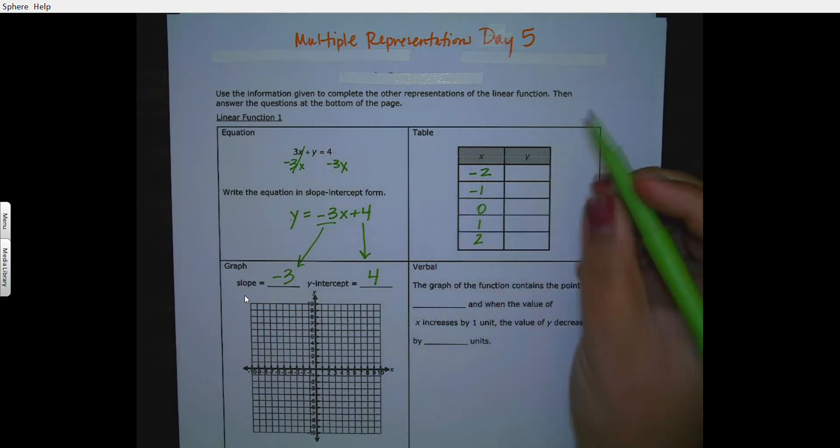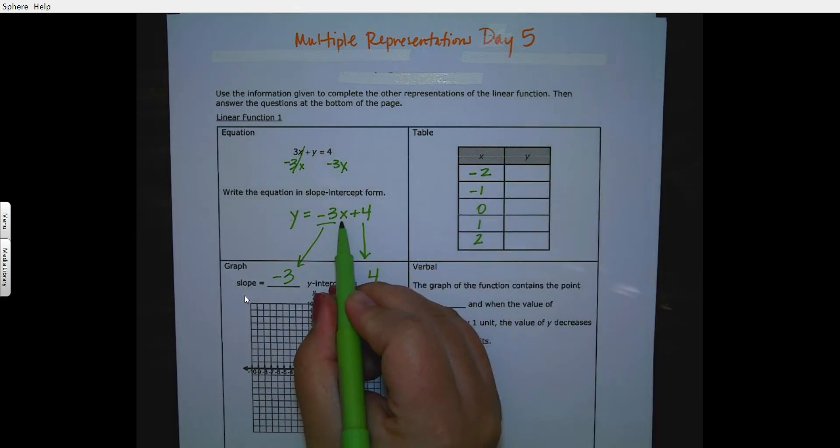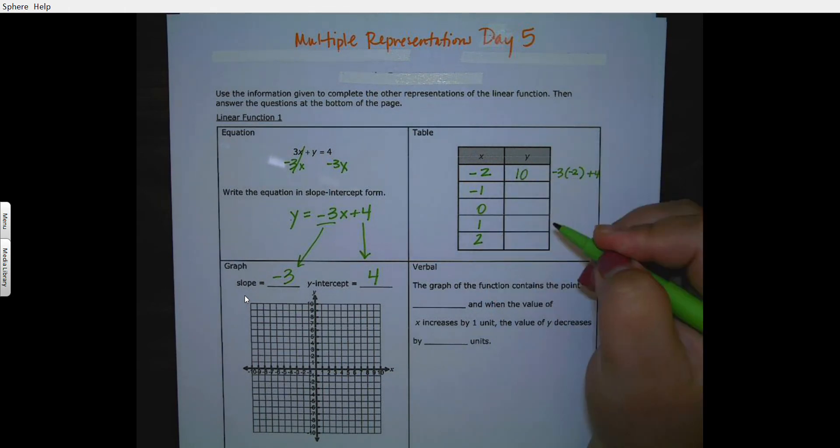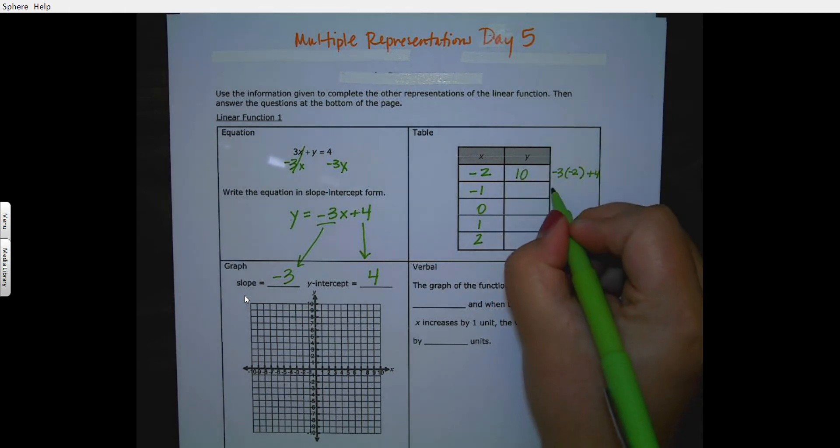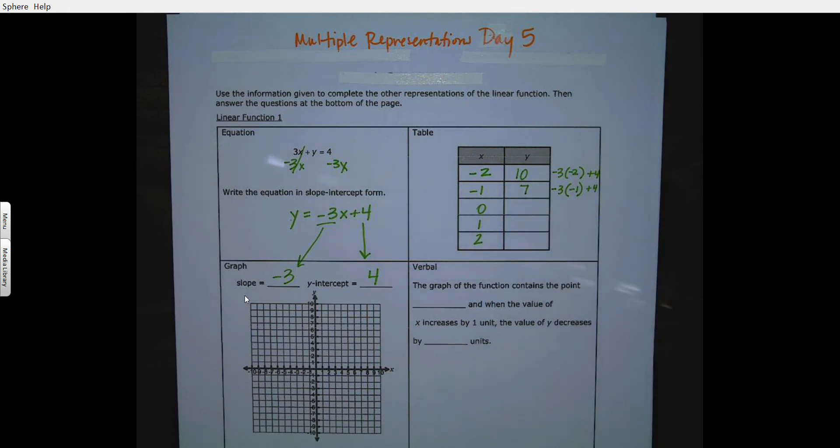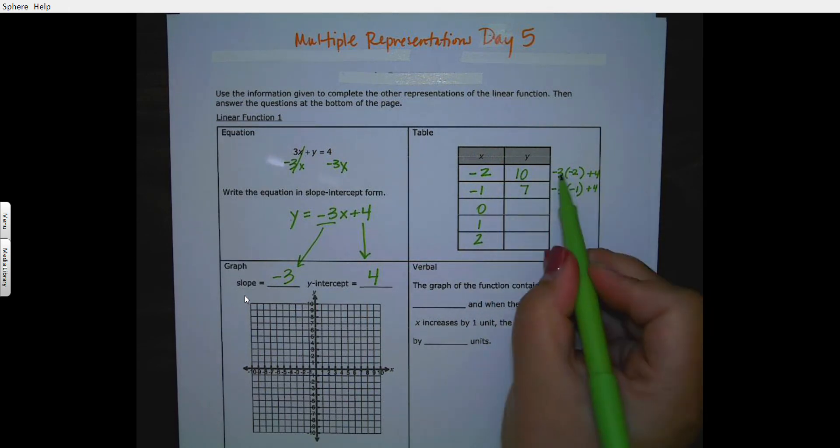I'm going to take negative 2 and plug it in, so negative 2 times negative 3 would be 6, plus 4 is 10. Negative 3 times negative 1 plus 4 is 3 plus 4 is 7.